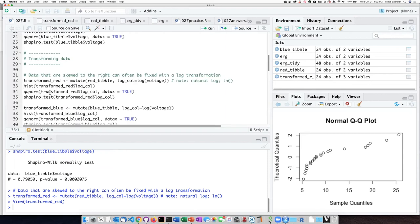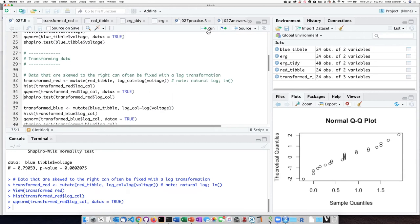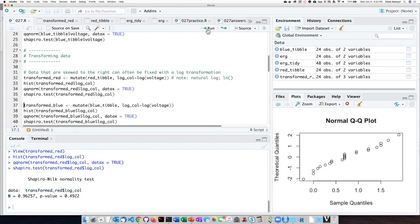If we then do a histogram and a normal quantile plot, we can see that this fixes the situation quite a bit. This is much more normal. And this is much more straight. And the Shapiro-Wilk test now produces a p-value that's nowhere close to 0.05. It's much higher than that.